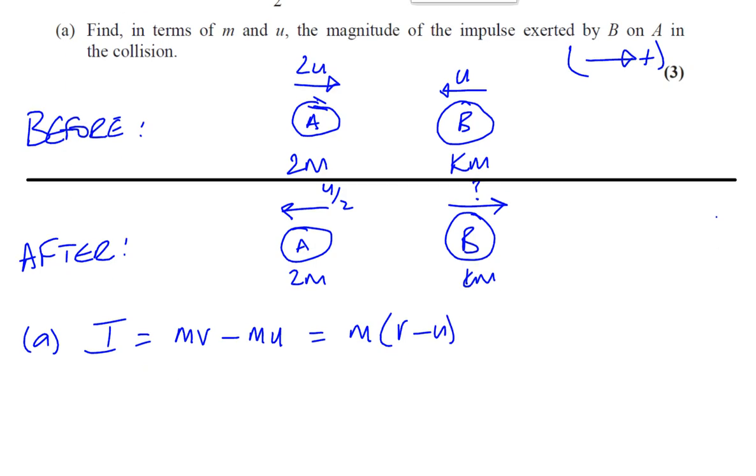So if we take the mass, the mass is 2m for A. If we consider A, why do we have to consider A? Because we know all the information required for A. The impulse is 2m times the speed before the collision.